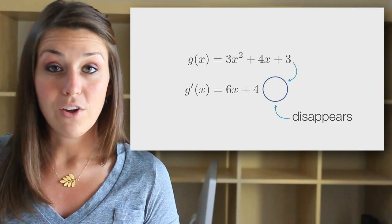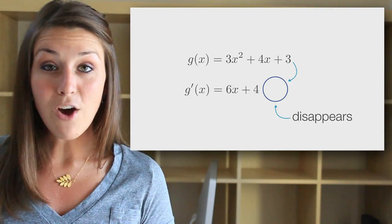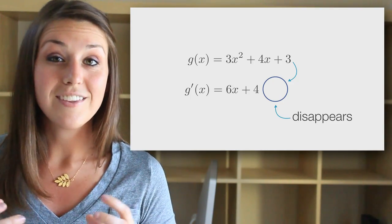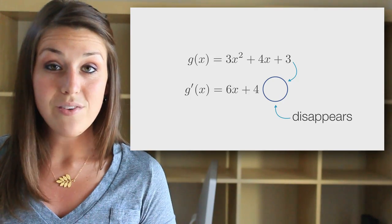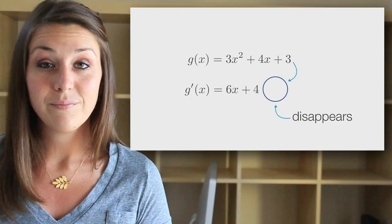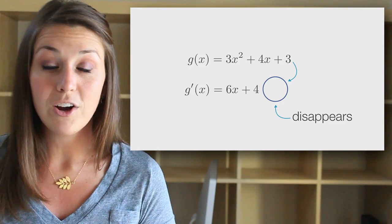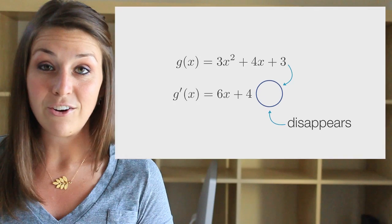Nor would we know the value of the constant, assuming there even was one. The way that we account for this is by adding the constant of integration to the antiderivative that we calculate. We use a generic +C to denote it. Remember that the constant of integration must always be added to your integral function when you're dealing with indefinite integrals.